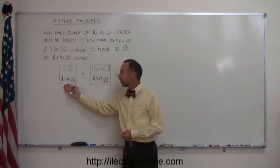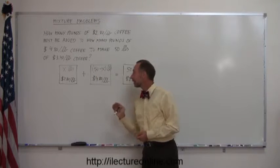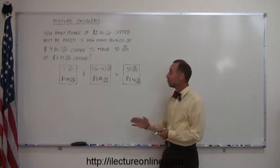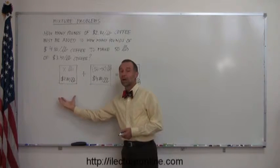We have the cost per pound and we have the number of pounds, the cost per pound, the number of pounds, the cost per pound, and the number of pounds. Now, when you multiply these two together, then you'll have the total cost of this mixture.